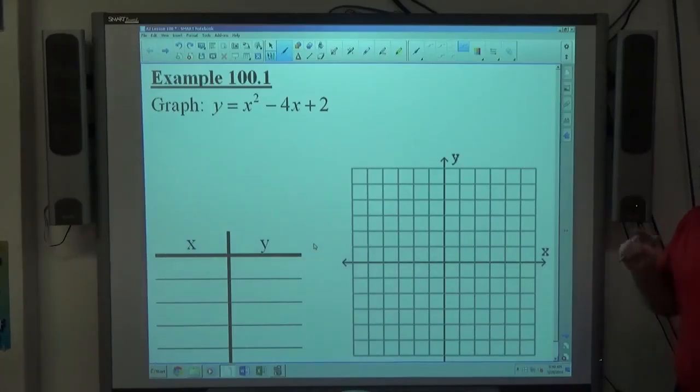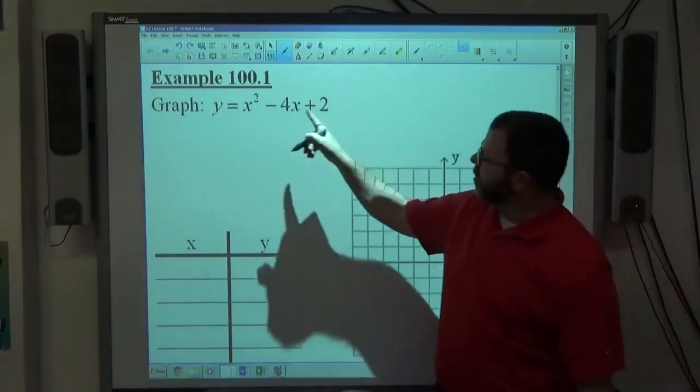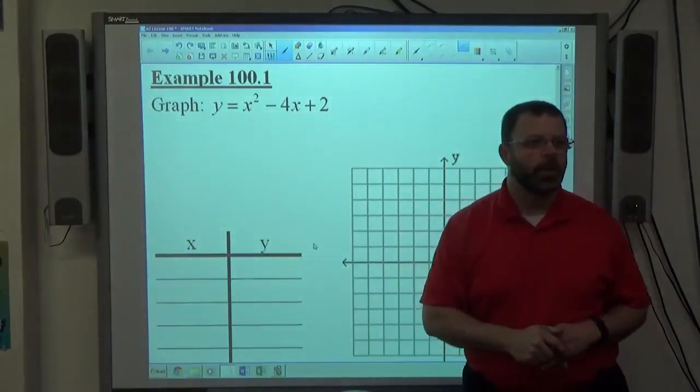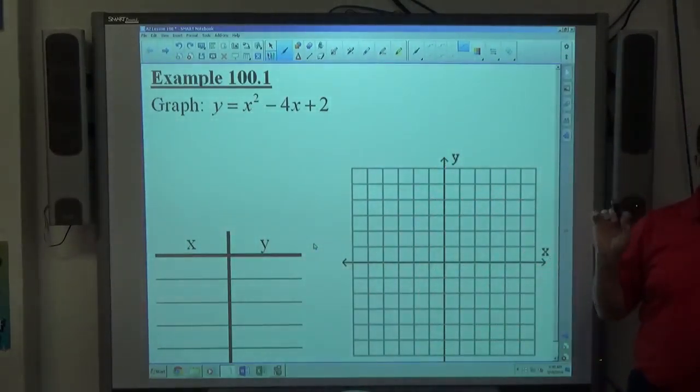A parabola is always going to be created when you have y to the first power, x to the second power as the highest powers of those two variables. And specifically when x is squared and y isn't, it's going to either turn upward or downward.